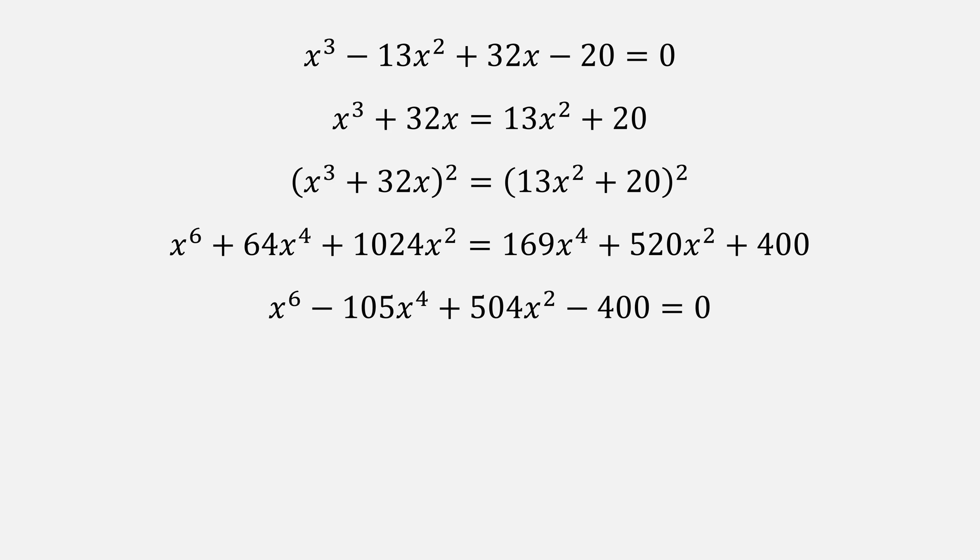Then square both sides of our polynomial and expand them. Afterwards we'll simplify to come up with x^6 - 105x^4 + 504x^2 - 400 = 0.